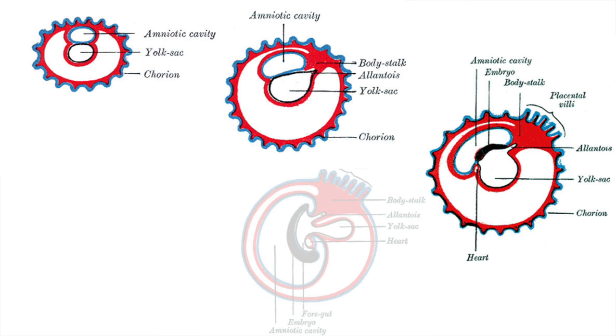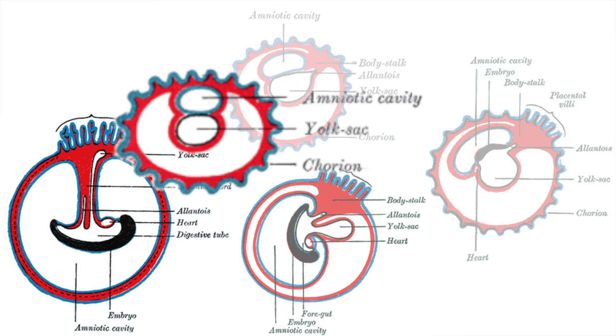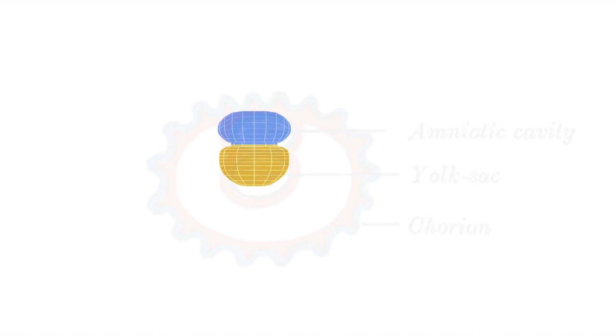The spaces around the embryo change dramatically over the course of development. These spaces are quite hard to visualize with only 2D images. So in this video we'll look at the amniotic cavity and the yolk sac in three dimensions, specifically how they both change shape over time.